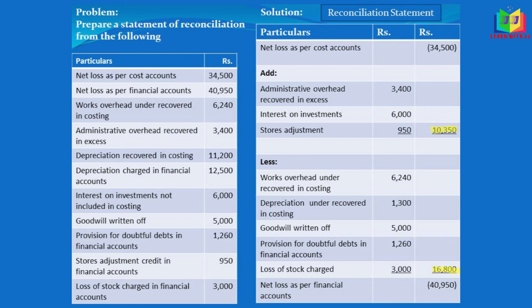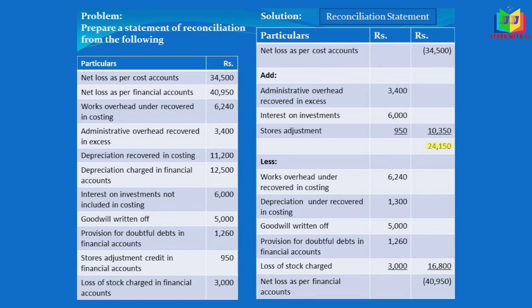No need to change the format — we just do it in reverse: with net loss we subtract the add total and we add the less total. So 34,500 minus 10,350 gives 24,150, and adding the less total of 16,800 gives 40,950. This 40,950 is the net loss as per financial accounts.